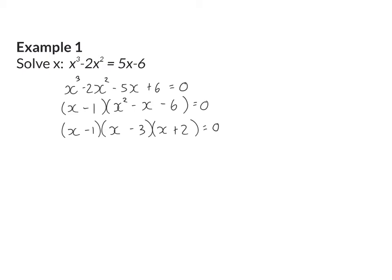And now we have the product of three factors equal to zero. That means that any one of the three factors can be equal to zero for this equation to be true. So to get our first factor to be zero, x will have to be equal to 1.